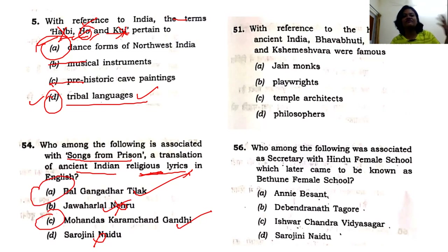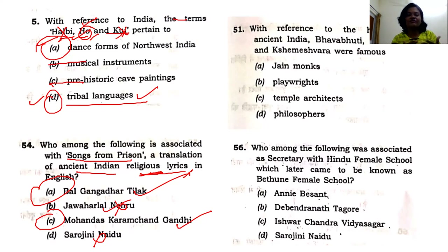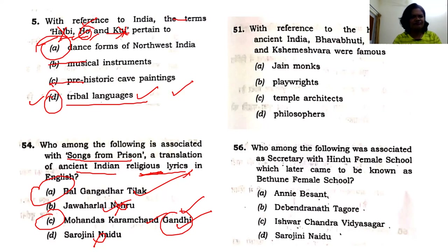Tilak is more relevant with Valentine Chirol's instances and his writings related to matters outside India — he even went to fight a case abroad — so he is not related to religious lyrics. Even if you didn't read it directly from Spectrum, where this particular 'Songs from Prison' is not explicitly mentioned, the applied reasoning leads you directly to MK Gandhi. I would term this an easy to medium level question.